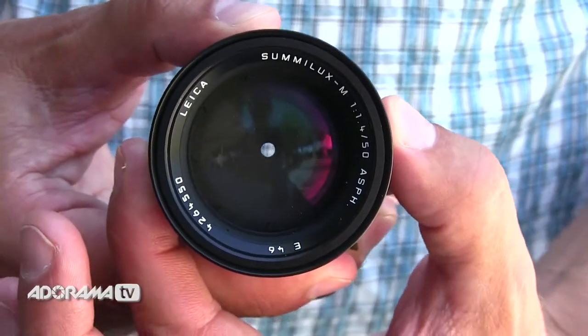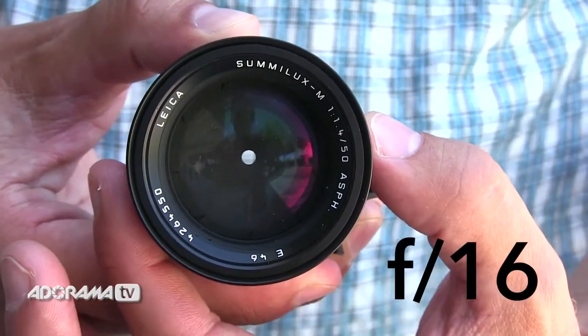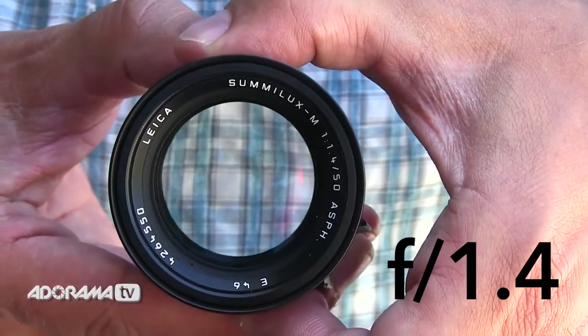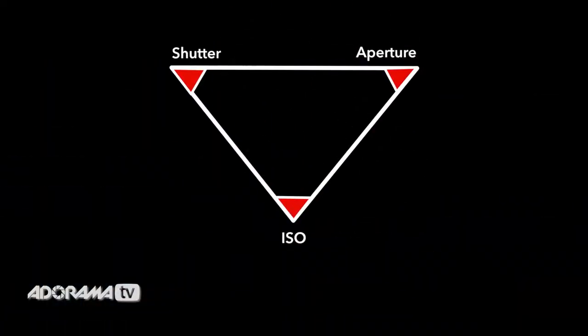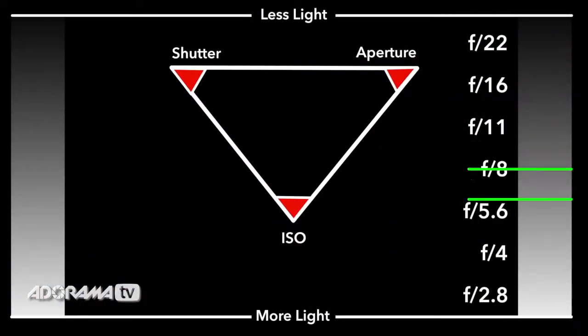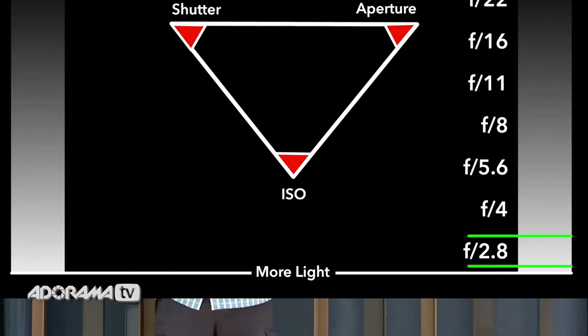The larger the number, the smaller the opening. I know that seems backwards but that's how it is — f16 is really small, f1.4 is really big. Right now it's important to understand that a big number means a small opening and a small number means a big opening. A big opening means lots of light is coming through, and a small opening means not very much light is coming through. Our aperture controls the quantity of light coming into our camera.